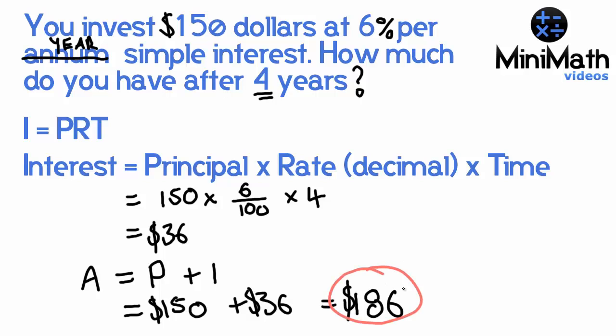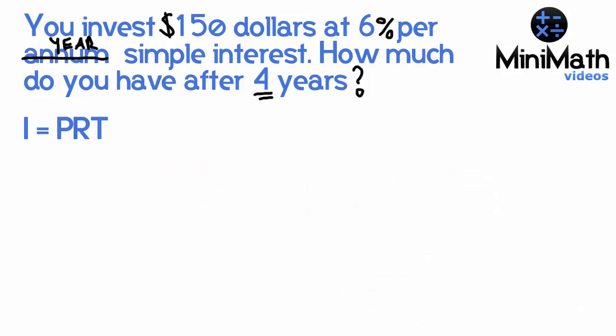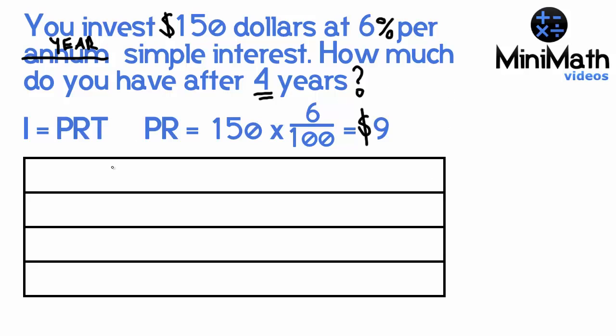How does this formula work? What's actually happening? For each and every year, you're getting 6% of the original amount, $150. We can work out what PR is, and it's $9. That's 6% of $150.